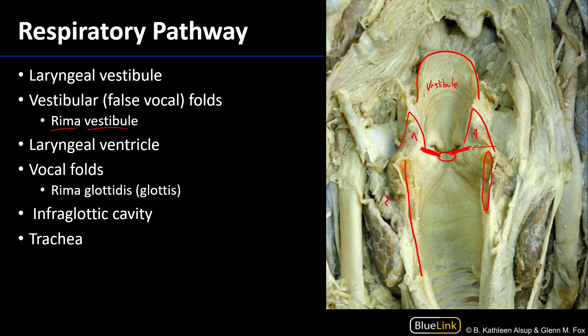Below the vocal folds is the infraglottic cavity. Below the margin of the cricoid cartilage, the infraglottic cavity transitions into the trachea, which is the passageway that conducts air between the larynx and the primary bronchi. It's quite a long section of conductive pathway for the respiratory system.